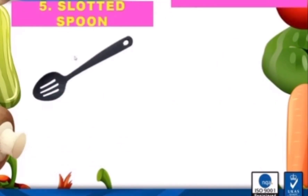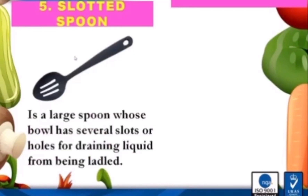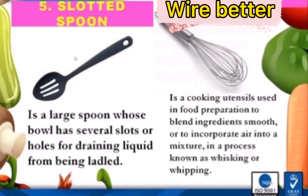Number five is a slotted spoon. This is the picture of a slotted spoon. It is a large spoon whose bowl has several slots for draining liquid. A batter is a cooking utensil used in food preparation, for example with eggs and cream.